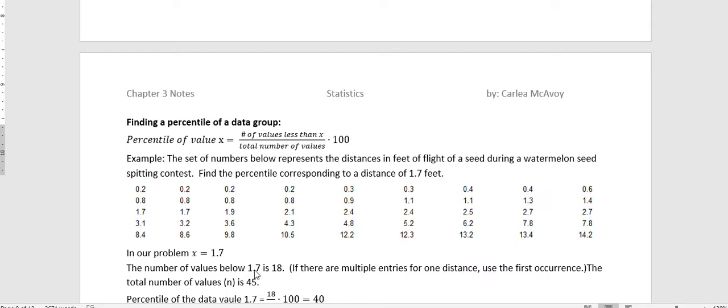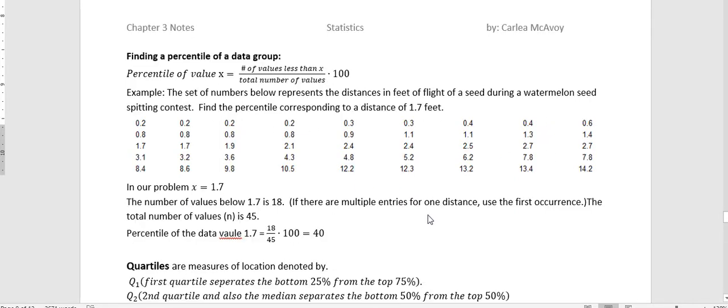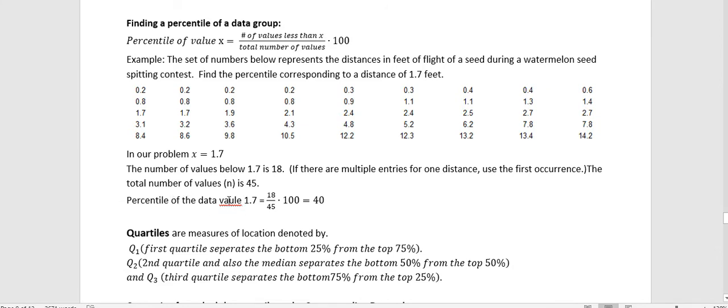So I have nine columns across and two rows would be nine times two is 18. And then the value appears. So there's 18 values that are below 1.7. The total number of values is 45 because I have nine columns in five rows. So to find the percentile of the data value of 1.7, we take the number of values below it, divide by the total number, and then multiply by 100, and we get the 40th percentile. So 1.7 is in the 40th percentile of this data set.